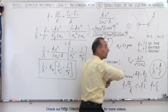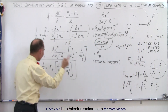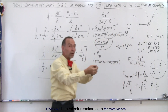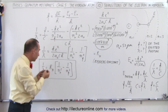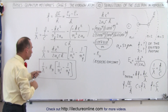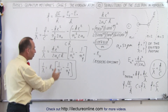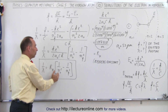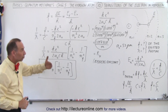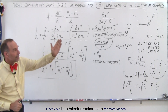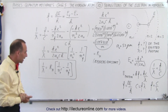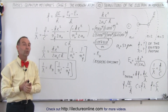When an electron jumps to a lower orbit, a photon would be emitted, and its wavelength can be calculated with this equation. When the electron jumps to a higher orbit, the photon would be absorbed, and again the wavelength can be calculated as 1 over lambda equals the Rydberg constant times 1 over n initial squared minus 1 over n final squared. The n numbers are the integers representing the locations of the electron orbits in the hydrogen atom. And that's how that equation was derived.